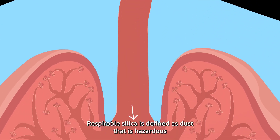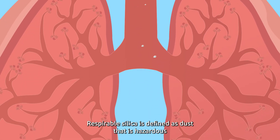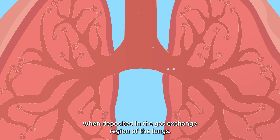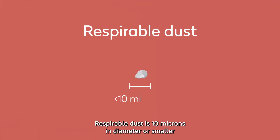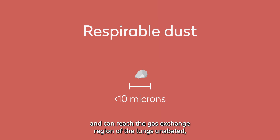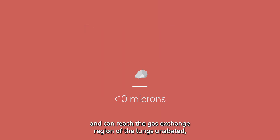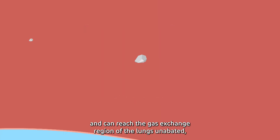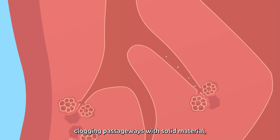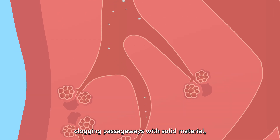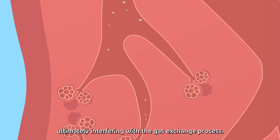Respirable silica is defined as dust that is hazardous when deposited in the gas exchange region of the lungs. Respirable dust is 10 microns in diameter or smaller and can reach the gas exchange region of the lungs unabated, clogging passageways with solid material, ultimately interfering with the gas exchange process.